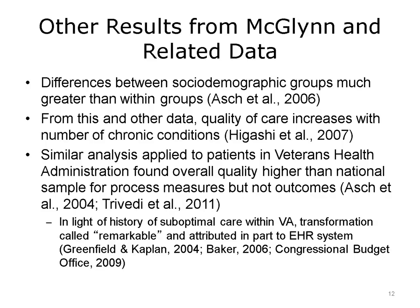A similar analysis applied to patients in the Veterans Health Administration system found that overall quality was higher than the national sample for process measures, though not for outcomes. In light of the past history of suboptimal care within the VA, its transformation has been called remarkable, and is attributed in part to the VA's EHR, or Electronic Health Records, system.